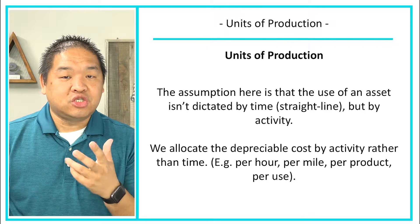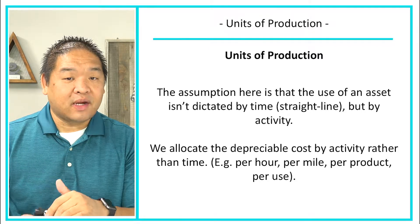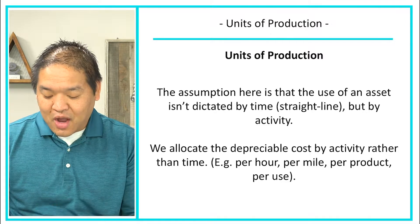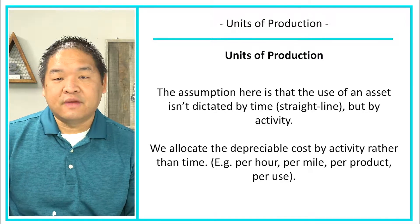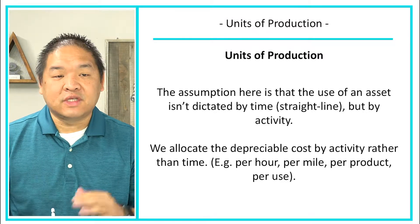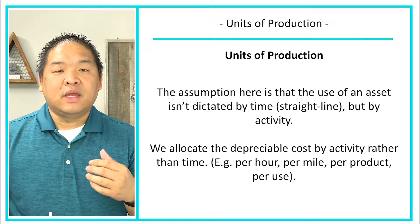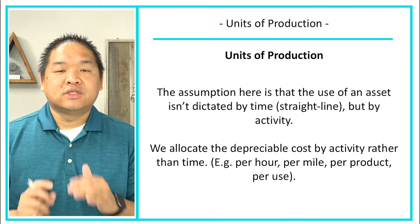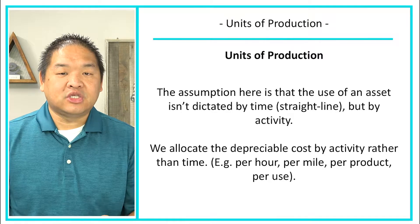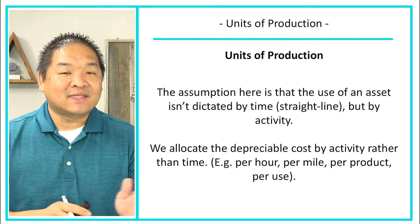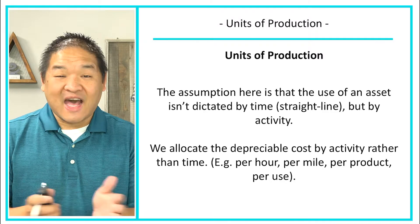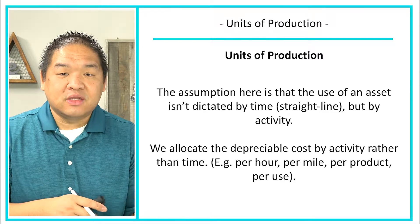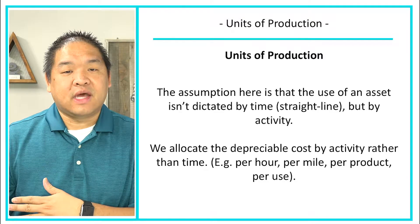So per hour — the machine is up and running. If it's not running, we're not depreciating anything. Maybe per mile: if we're using a vehicle, instead of using straight-line or declining balance, we base it on miles. After a hundred thousand miles, we get rid of the vehicle. Miles is a better indication of depreciation expense than time is. How fast we get to a hundred thousand miles dictates more depreciation.